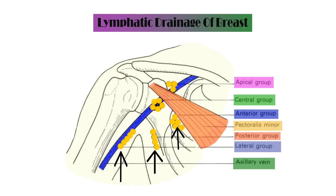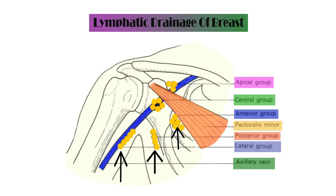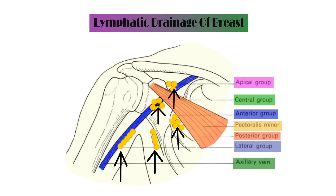The level two group of lymph nodes is the central group, which lies beneath the pectoralis minor muscle. The level three group lies above and medial to the pectoralis minor muscle and is called the apical group of lymph nodes.